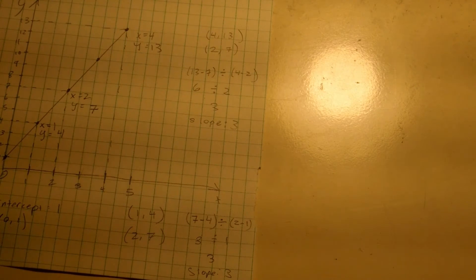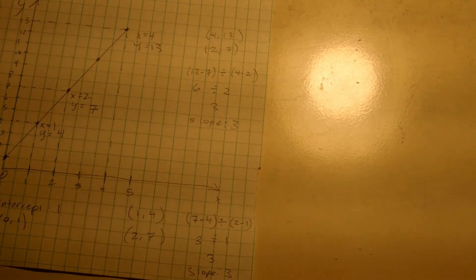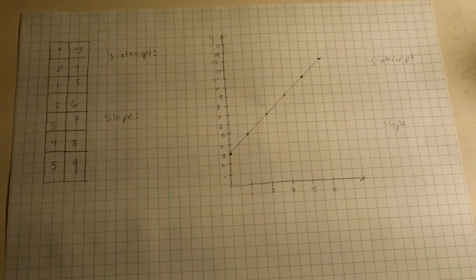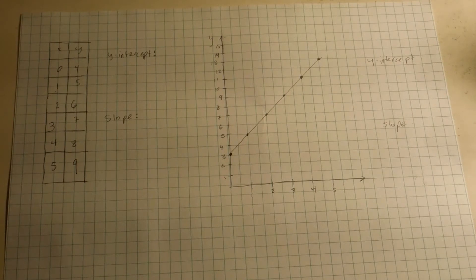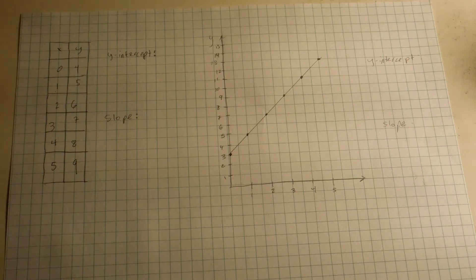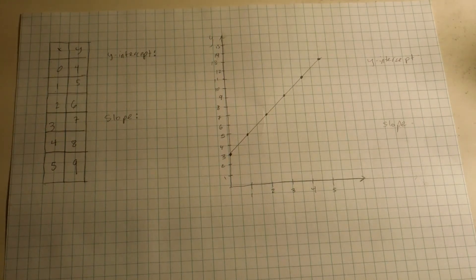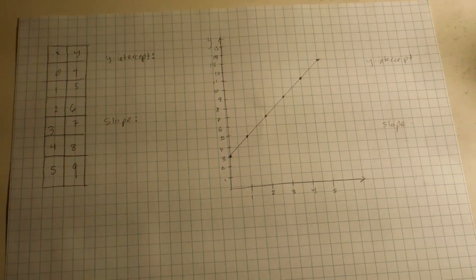We've now looked at a table, a graph, and an equation. Now all we have to do is compare them. In this problem, you can tell we have a table and a graph. I think that a table is easier than a graph, so I want to start with the table. Again, I recommend starting by finding the y-intercept.